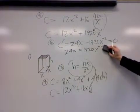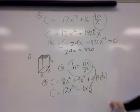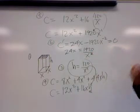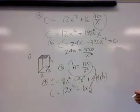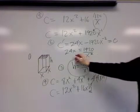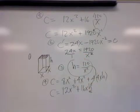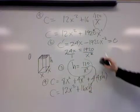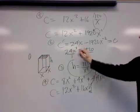You could then take that x to the negative two and rewrite it as x to the positive two in the denominator. You could set it up for cross multiplying.